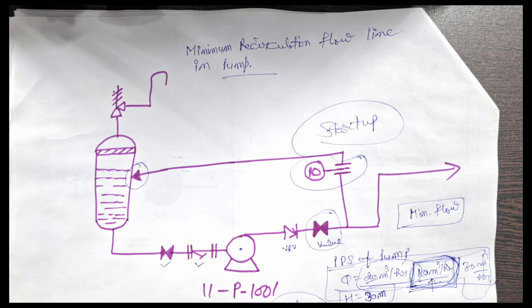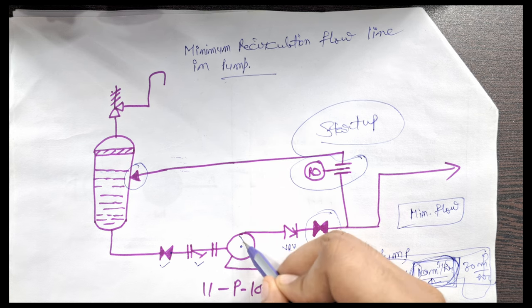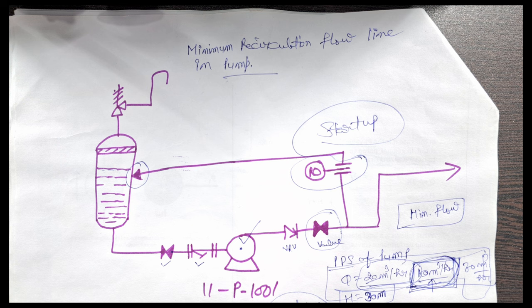These are the reasons why we use the minimum recirculation line — because every pump has a specified minimum flow, and if you go below that point your pump internal parts could be damaged. That's why we provide the minimum recirculation line to prevent pump damage. Please let me know in the comments what are the more applications and significance of the minimum recirculation line. Thanks for watching — keep learning!